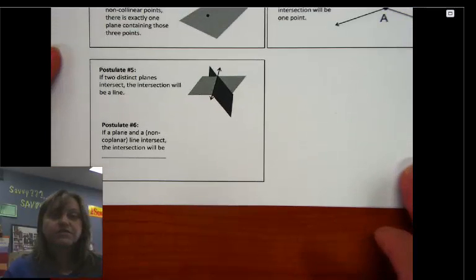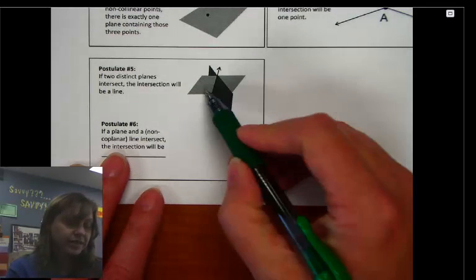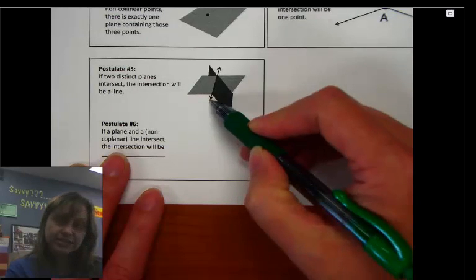Postulate number five. If two separate or distinct planes intersect, that intersection will be a line, and we saw that up in the example above. So here's two planes that are crossing. They're going to share an entire line.